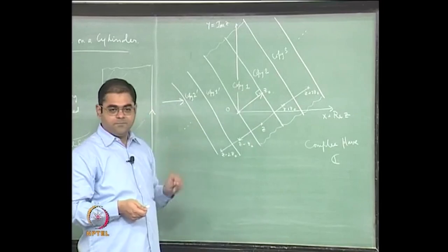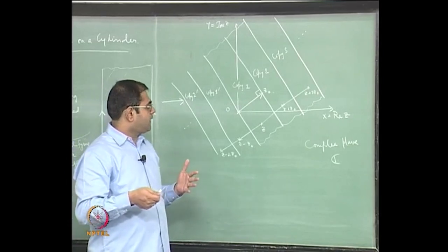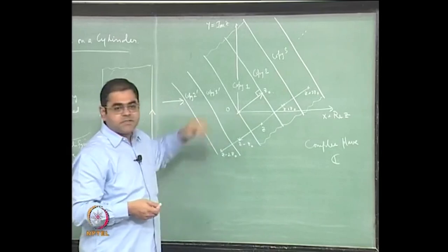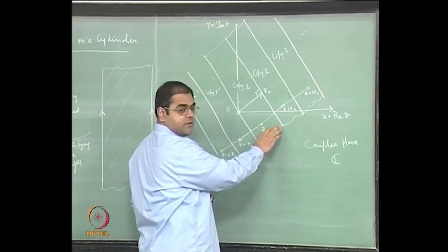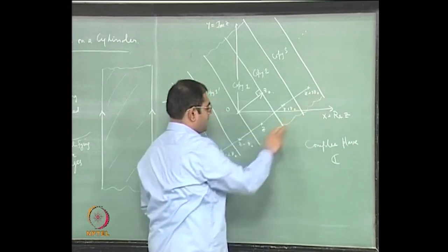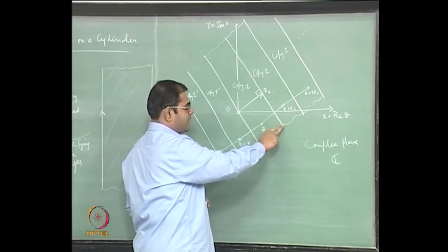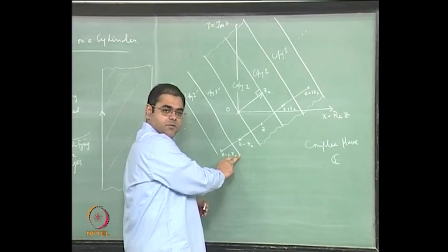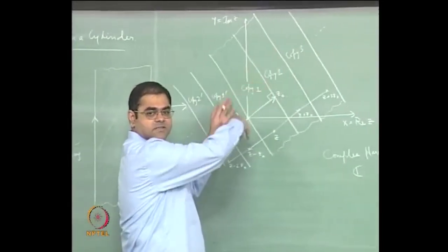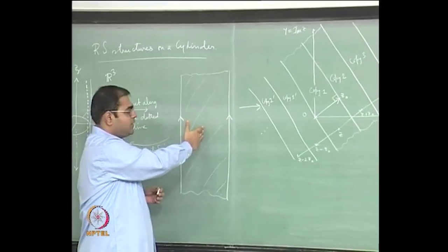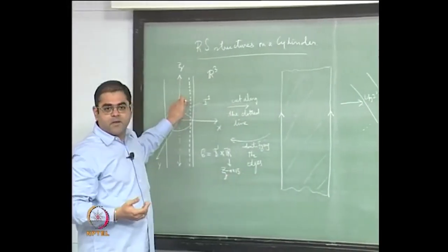Translation by z₀ applied so many times maps this strip exactly onto the next strip; translation by 2z₀ maps this strip onto that one; translation by −z₀ maps this strip onto the one on the other side. So translation by integer multiples of z₀ is precisely the operation that identifies all these strips together to give back the original strip. That is the whole point of trying to get a complex structure on this.